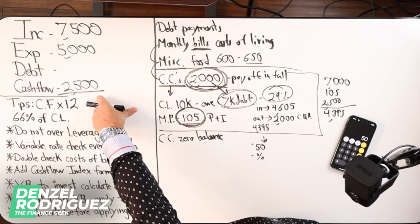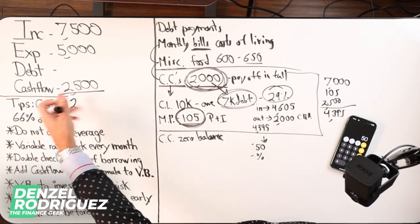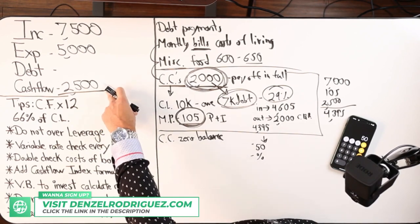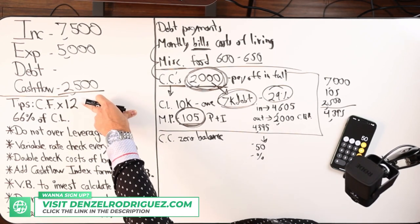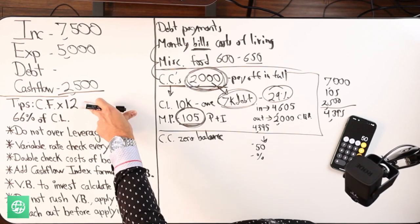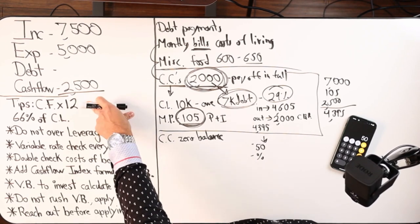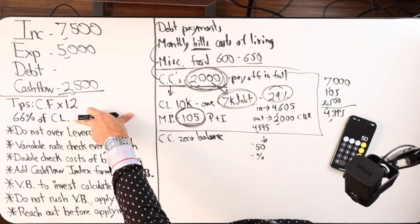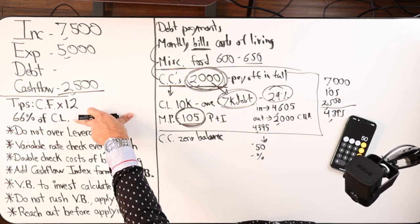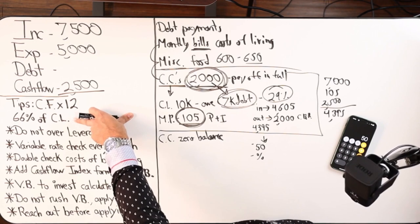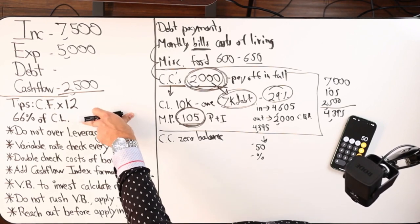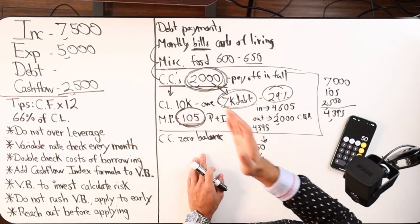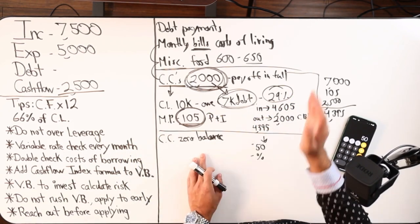When it comes to leveraging, this is a constant tip that I share. What is your cash flow times 12 in a year? Got to make sure your numbers are correct in order to get an accurate number. Take that number, then you take 66% of your credit limit. So if you have a $50,000 HELOC, 66% of that is $33,000. That's your chunk limit, max limit. That's the same number when it comes to investing as well.